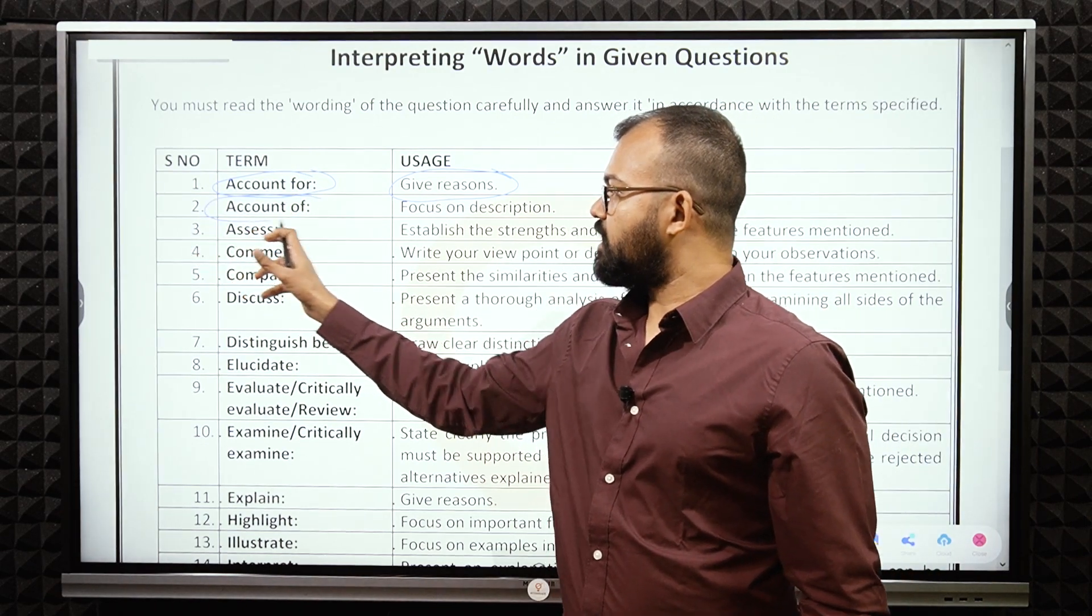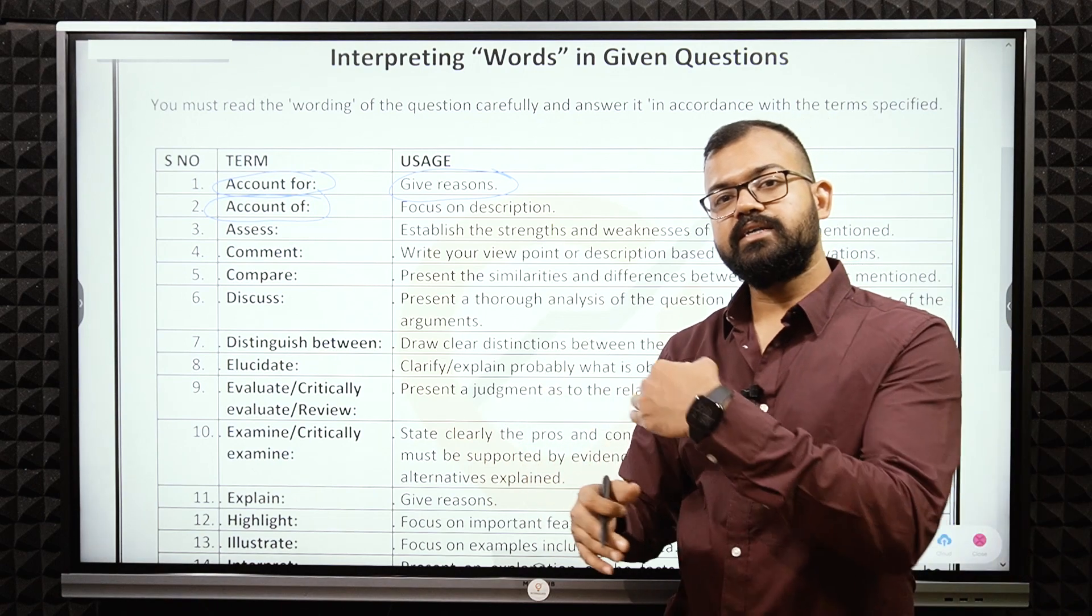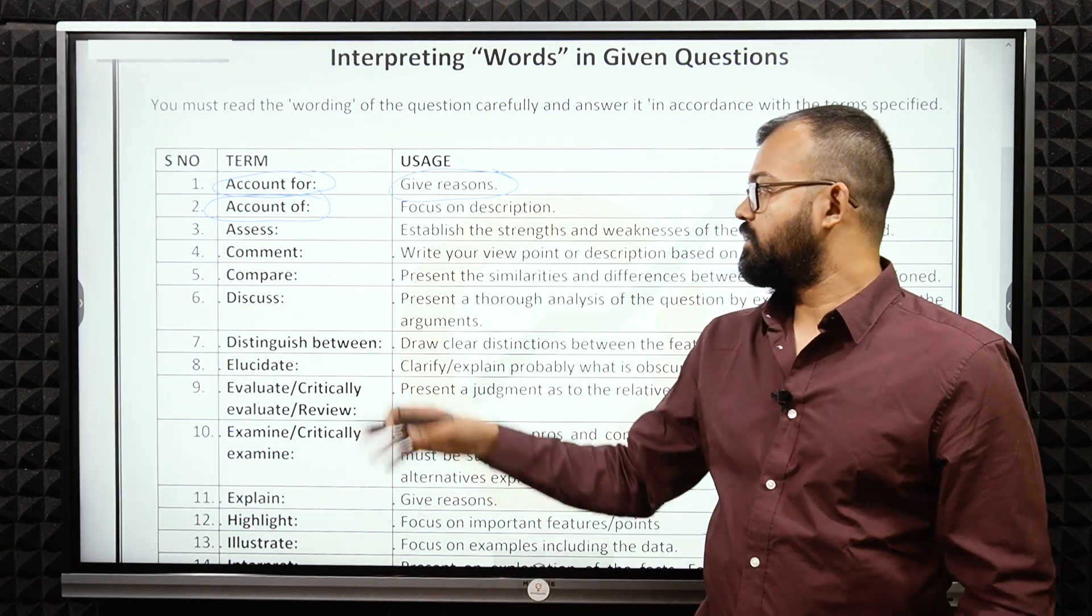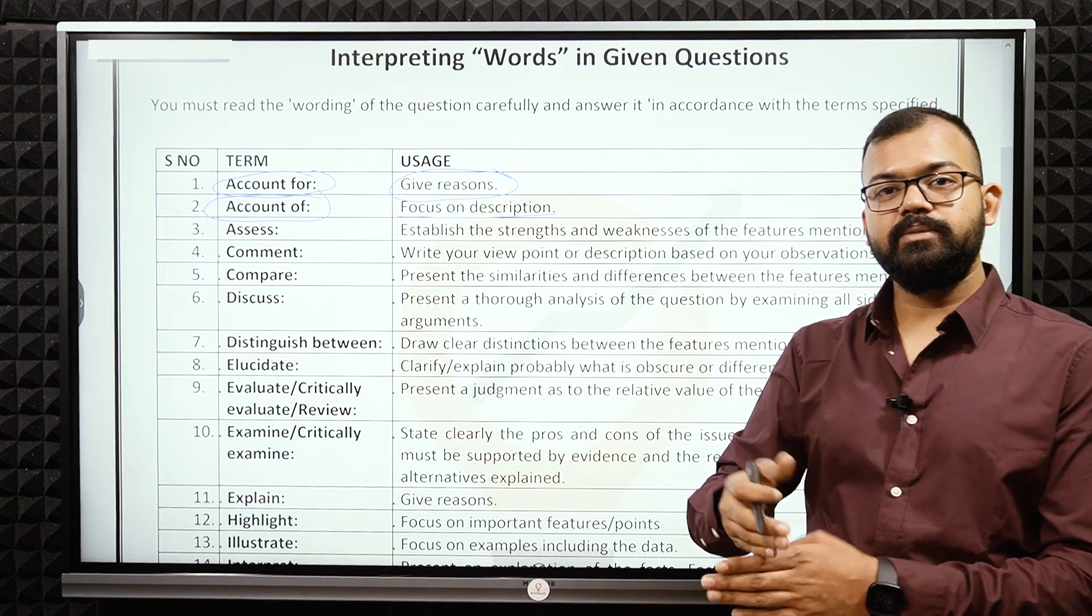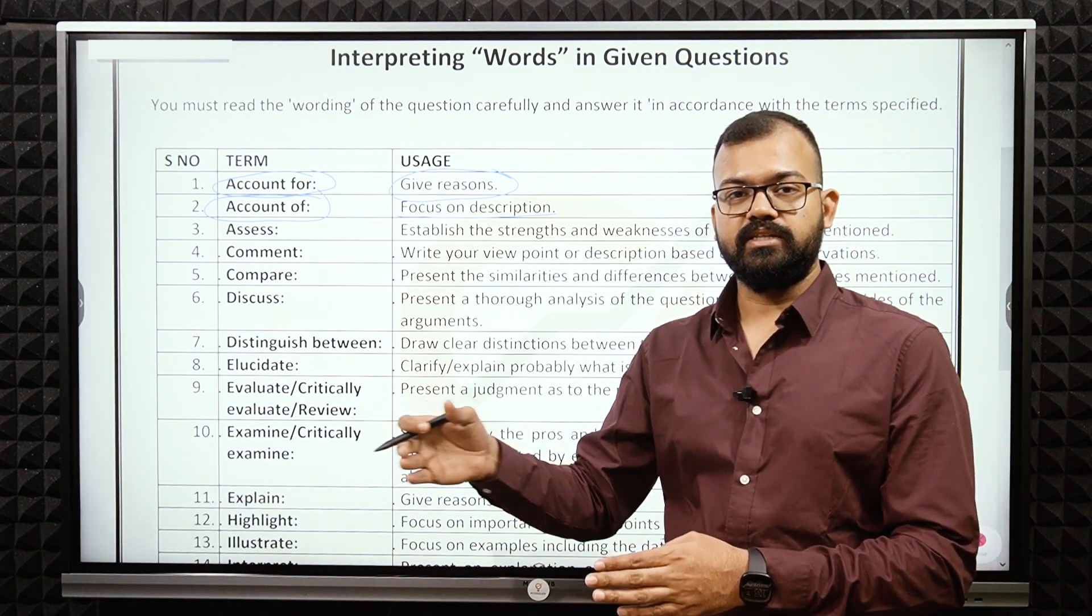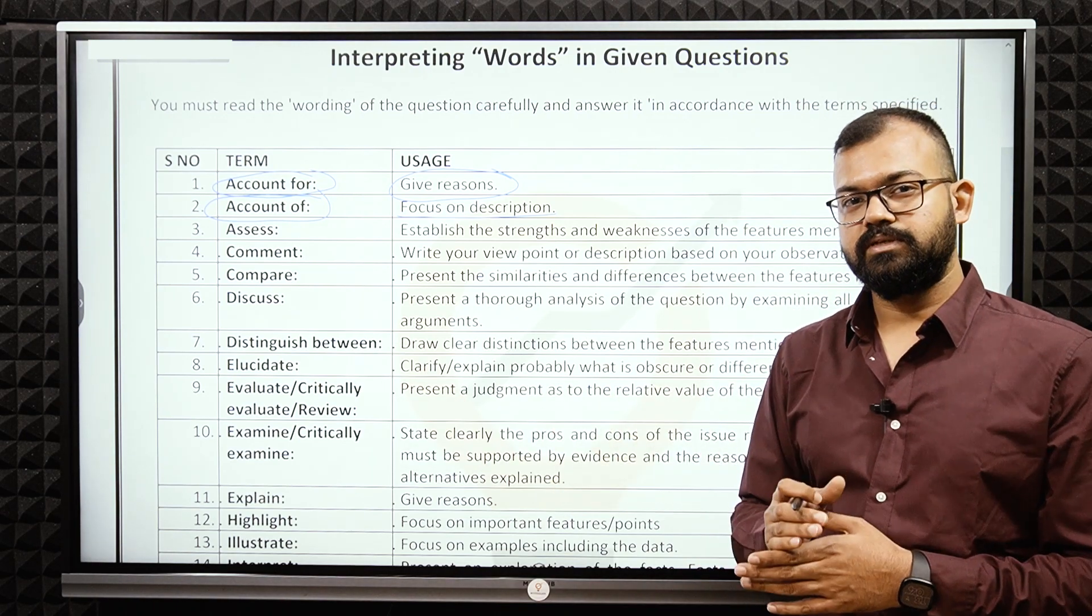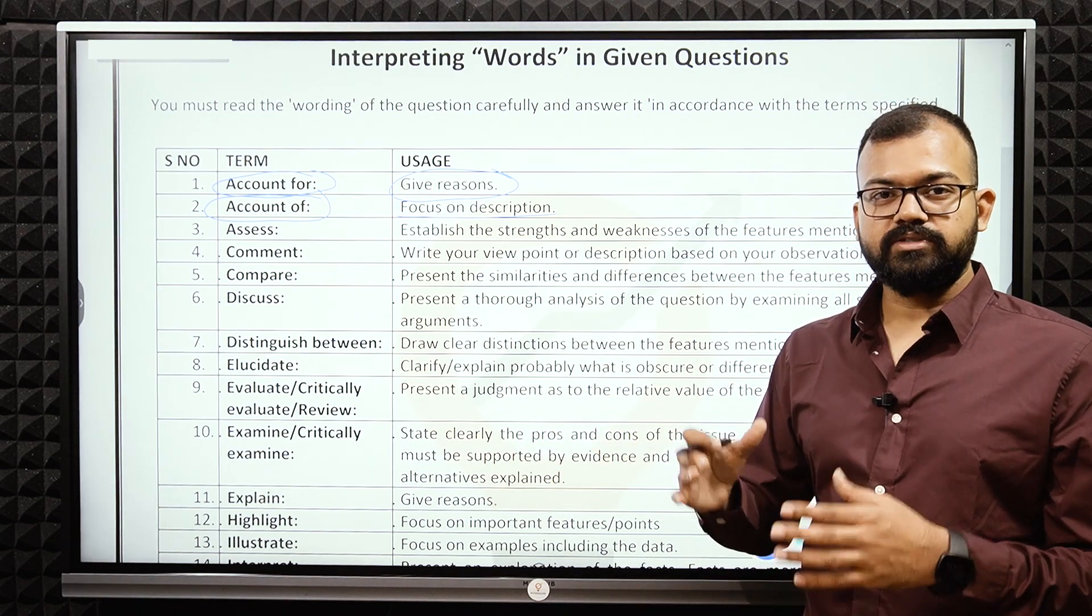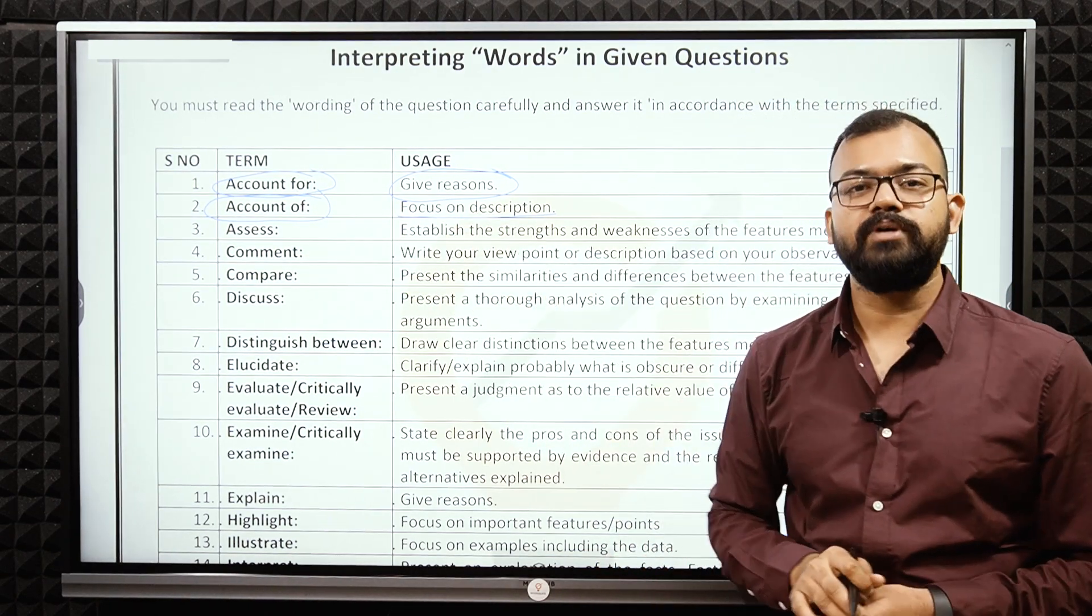The second is account of. Account of means here they're asking about the performance. Focus on description more. Like after the implementation of MGNREGA, that is Mahatma Gandhi National Rural Employment Guarantee Act. What happened to employment? Was India able to increase that? Account of means the description you have to tell here.